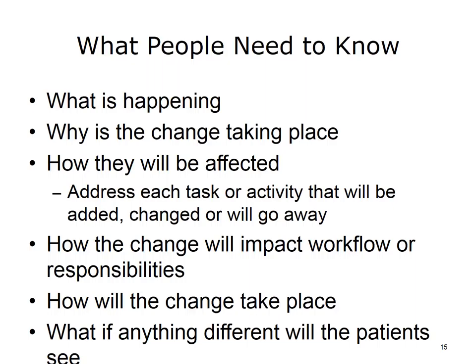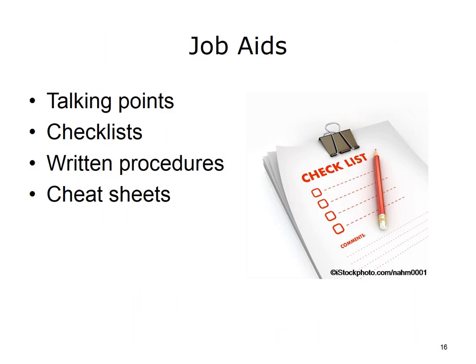Communication can occur via email, posted notices, or staff meetings. In-person communication provides opportunities for attendees to ask questions and for the presenter to get feedback that might increase the success of the project. When process changes necessitate new steps or tasks, job aids may be helpful. For example, in the Automated Appointment Reminder System implementation, the front desk receptionist needed to notify people scheduling appointments that they would receive a reminder call. A job aid with talking points and answers to common questions was provided. Job aids might include talking points, checklists, written procedures, cheat sheets, memory aids, or descriptions of new system features for common tasks. The type and extent of the job aid depend on how extensive the change is.